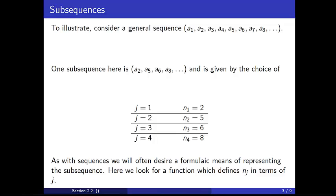Finally, j=4 and n_4=8 means that a_8 is in the fourth position of the subsequence and the eighth position of the original. As with sequences, we will often desire a formulaic means of representing the subsequence. Here we look for a function which defines n_j in terms of j — in other words, we want to understand how position in the subsequence relates to position in the original sequence.